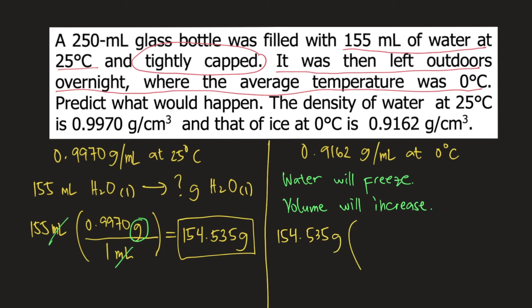Then we need to use the density of water at 0 degree Celsius. So at 0 degree Celsius, 0.9162 grams of water is equivalent to 1 ml. So grams would cancel, we have ml on top. So if we solve this, this is equal to 169 ml.